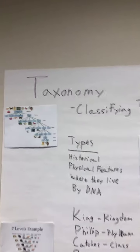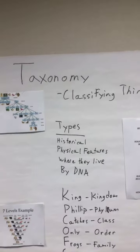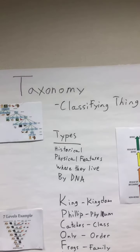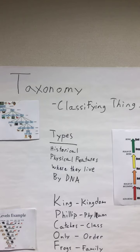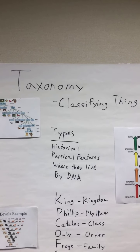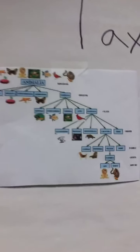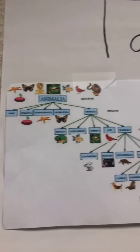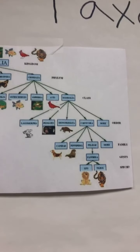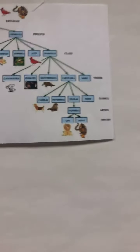Taxonomy is a word that just means the branch of science that involves classifying things. It's just about dividing things into groups and looking at what makes them similar or different, especially when the thing we're talking about is animals. You might have seen things that look like this at maybe a museum or in a book or in school if you were learning about that.